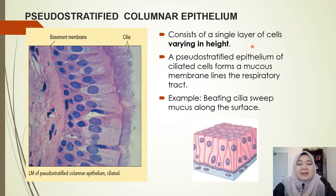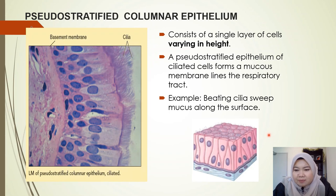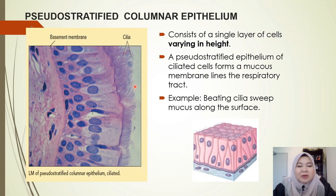Pseudo-stratified consists of a single layer of cells that vary in height. Pseudo-stratified epithelial cells usually have cilia — you can see the very fine hairs on top of the cells. They form the mucous membrane, and you can usually find them lining our upper respiratory tract.